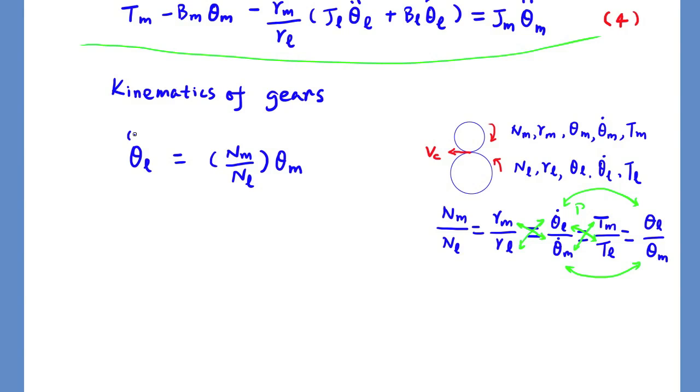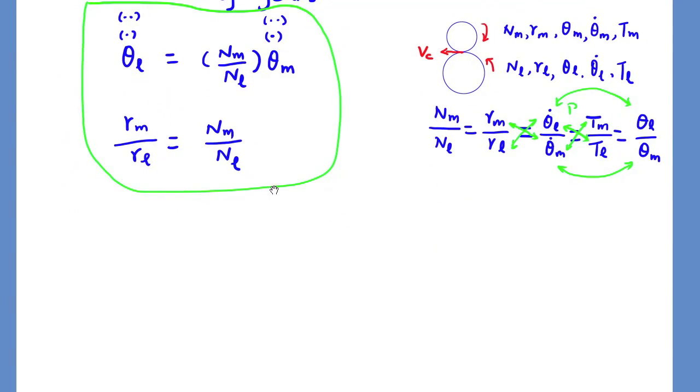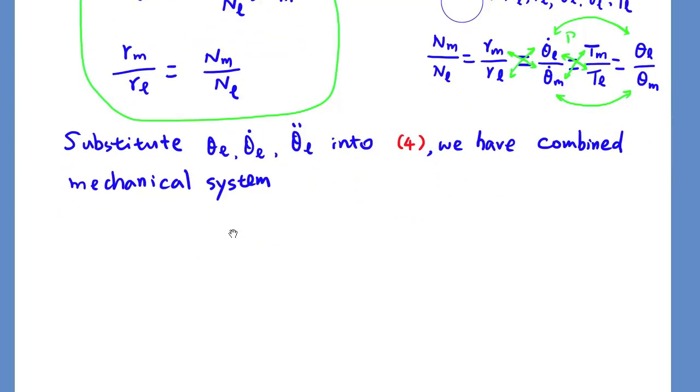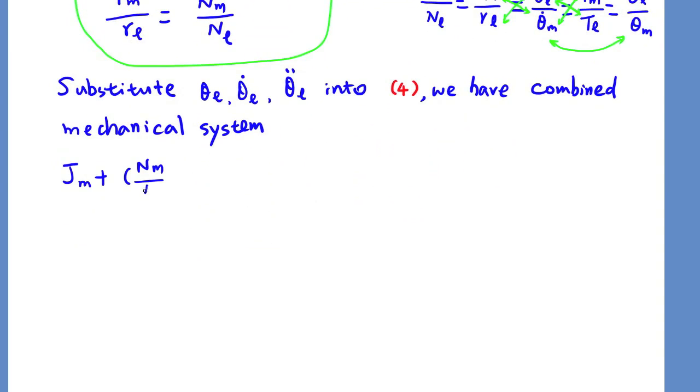So we can find the angular displacement, angular velocity, and angular acceleration between the motor shaft and robot arm load shaft. Substitute these relationships to equation number 4. We can have this combined mechanical system.